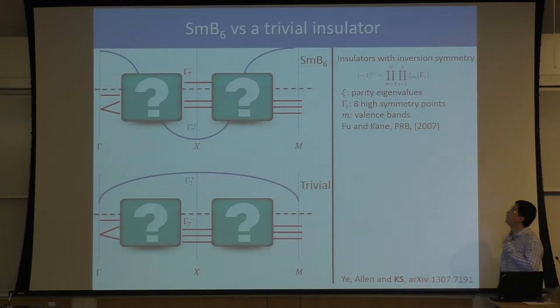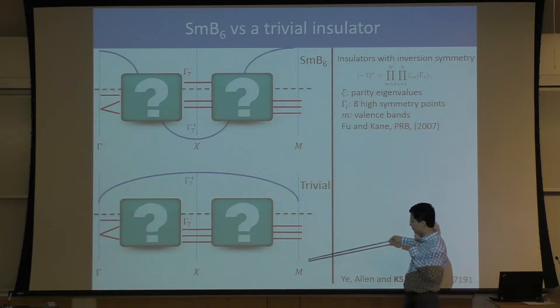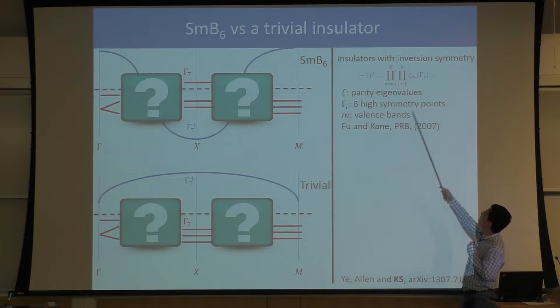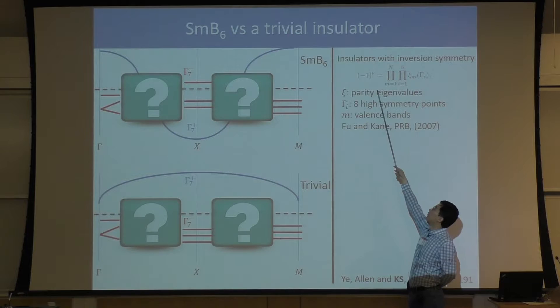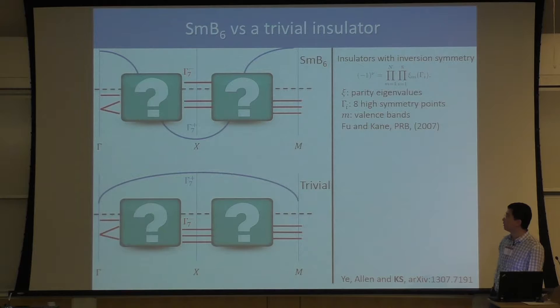Fu and Kane told us: if you want to know the topological index of a topological insulator, you just need to get the parity eigenvalues for all the filled bands at high symmetry points — gamma, X, M, and R — multiply them all together for filled bands only, and you get minus one to some power. This power is either zero or one. If it's zero, it's a trivial insulator; if one, it's a topological insulator.